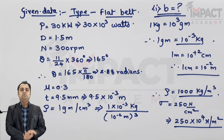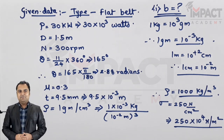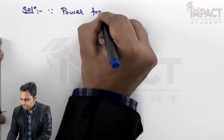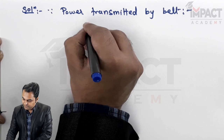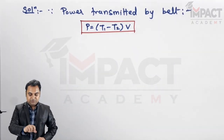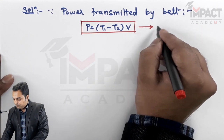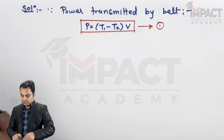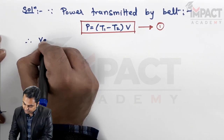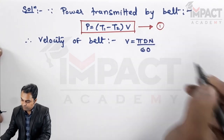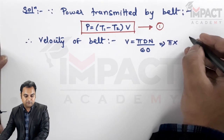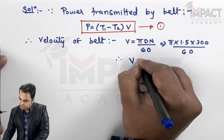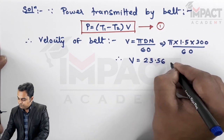Starting the solution using the power transmitted by belt formula: Power = (T1 − T2) × V, called equation 1. The velocity of the belt is given by V = π D N / 60 = π × 1.5 × 300 / 60, which gives a velocity of 23.56 m/s.